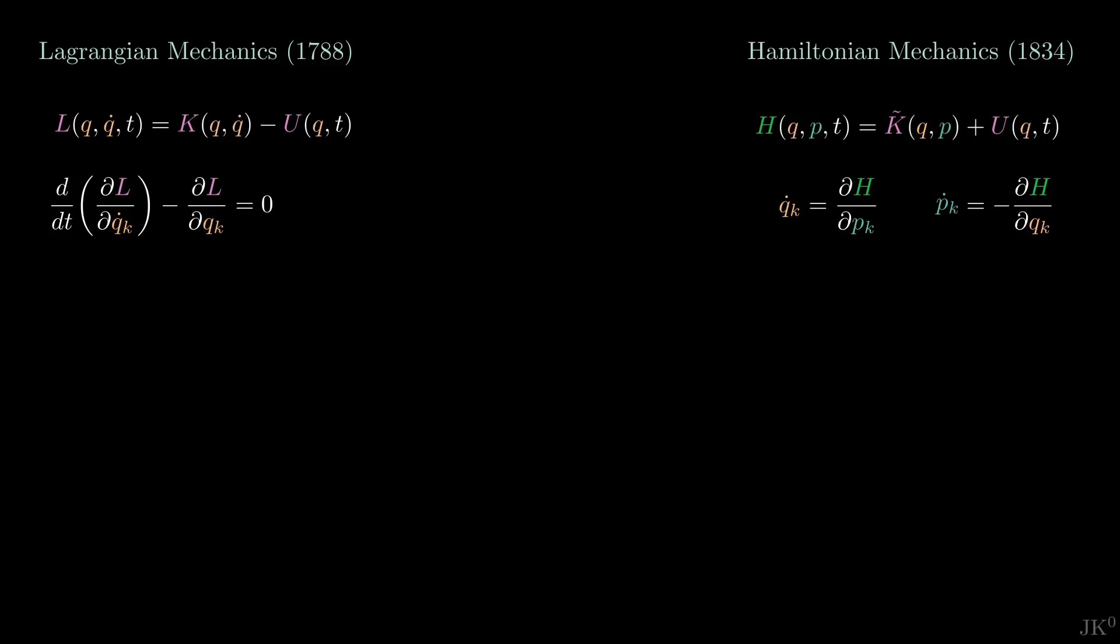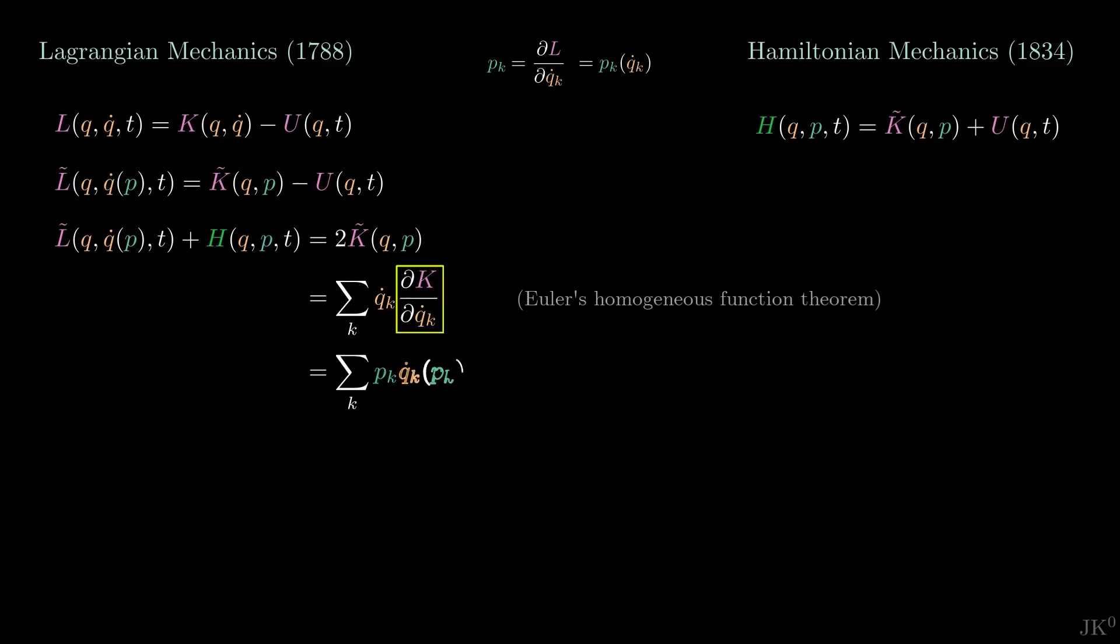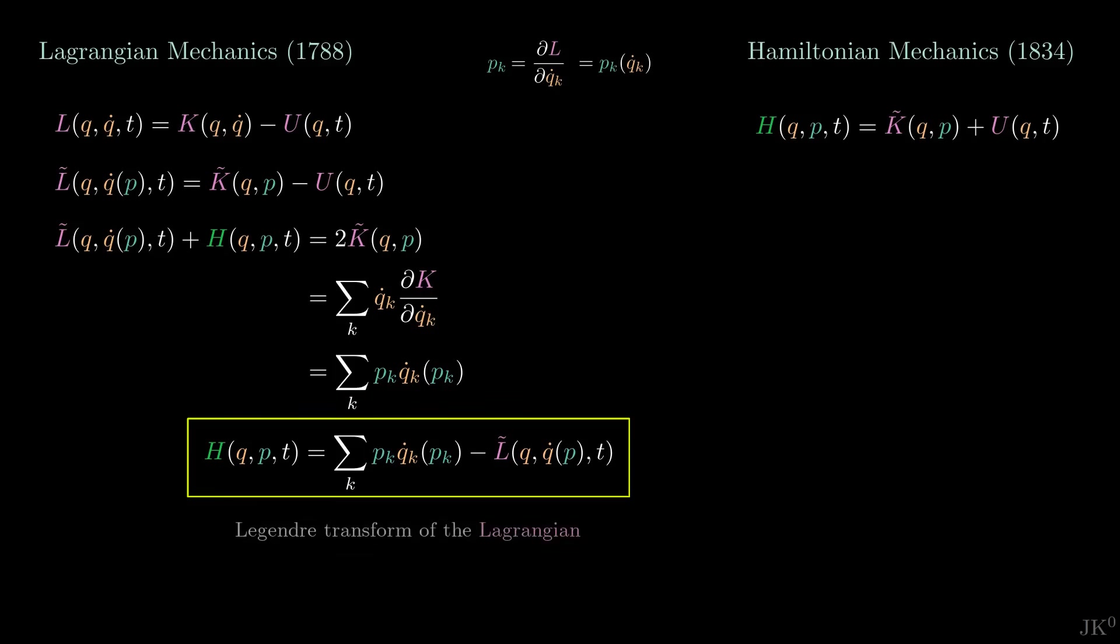For this, we need a direct relation between the Lagrangian L and the Hamiltonian H. Replacing q-dot as a function of the canonical momentum p in the Lagrangian, we get what I call L tilde. Adding this and the definition of Hamiltonian found before, the potential energy cancels out, and we get this expression. Here I bring back this relation found earlier, and use that this derivative is the definition of the canonical momentum p. From here, we can finally write the Hamiltonian in terms of the Lagrangian. This expression is exactly the Legendre transform of the Lagrangian mentioned at the beginning.